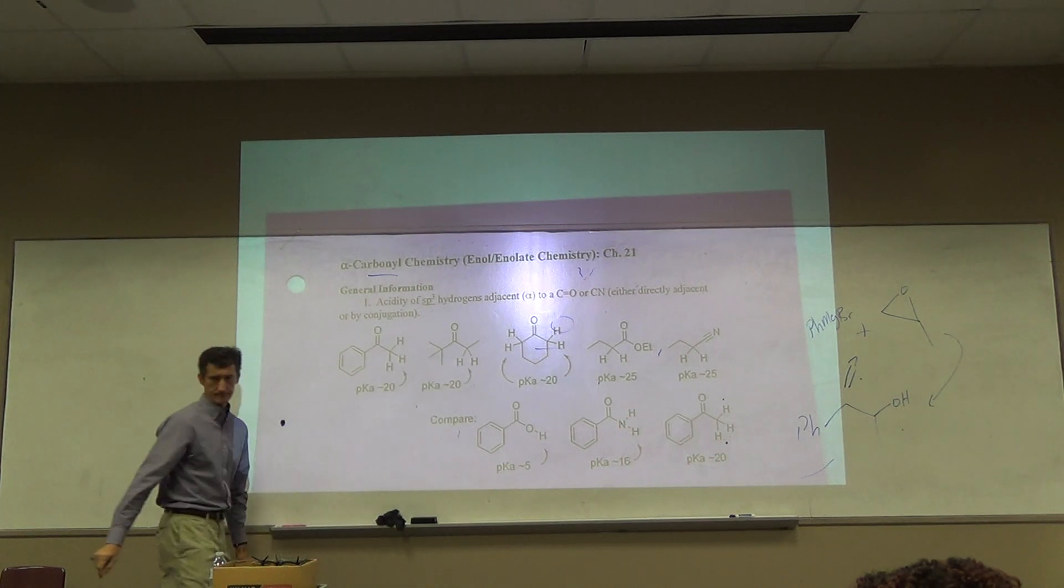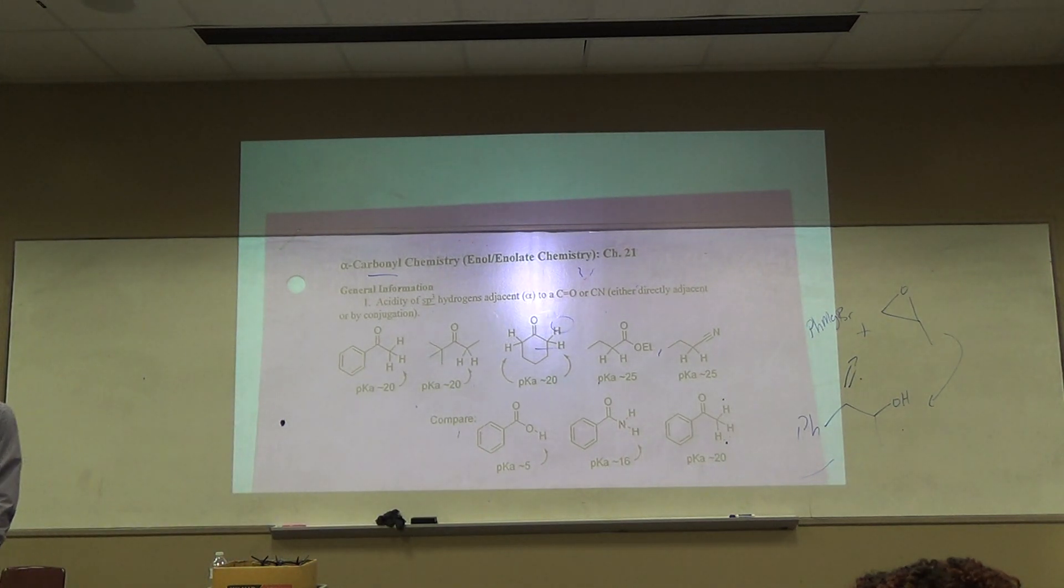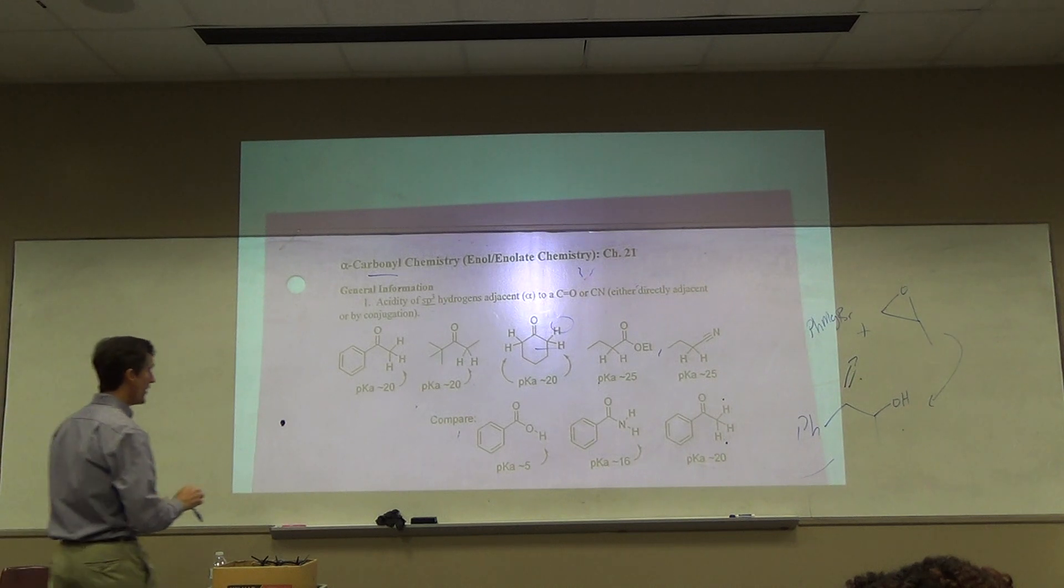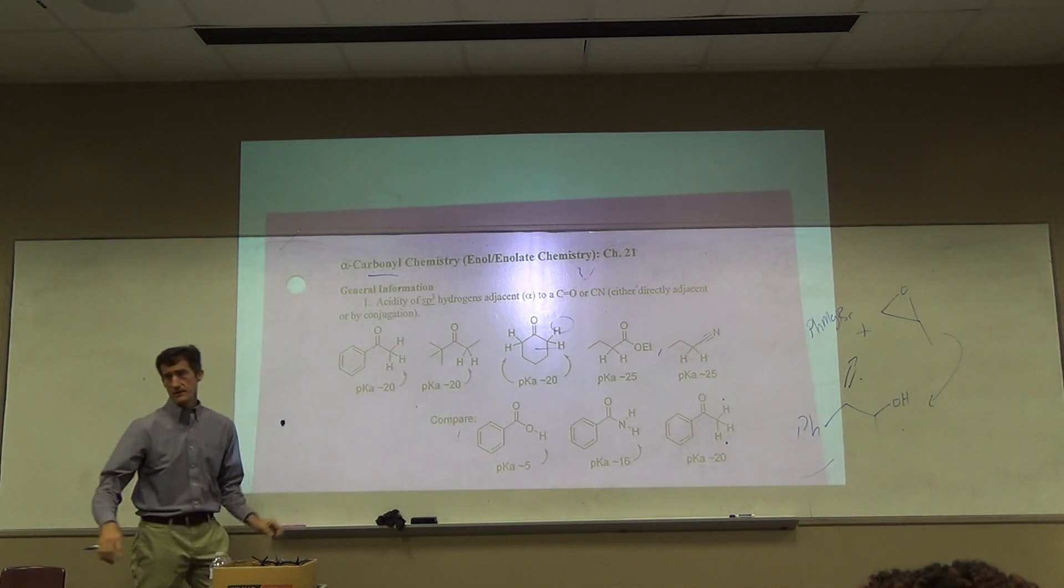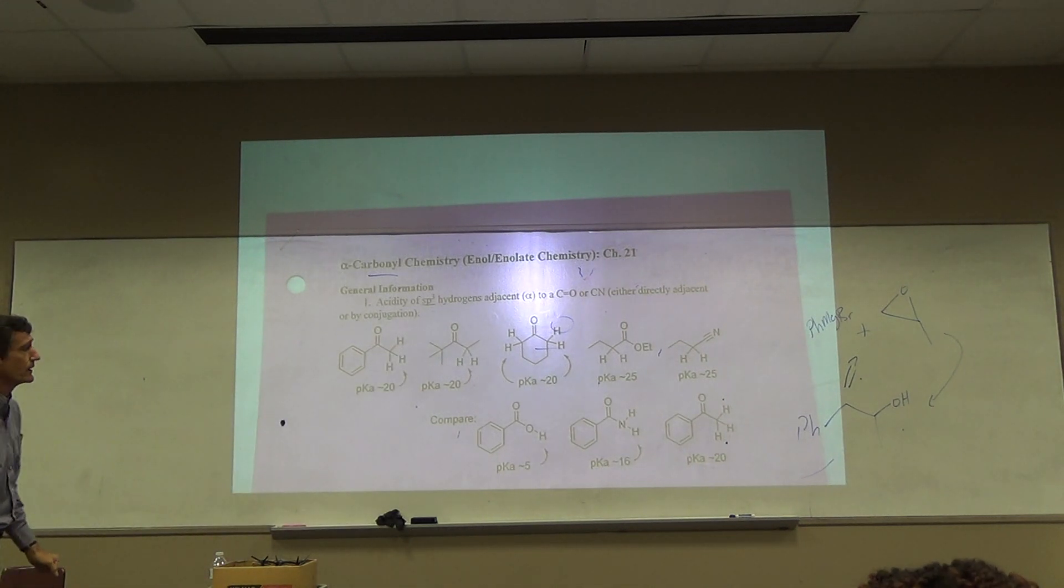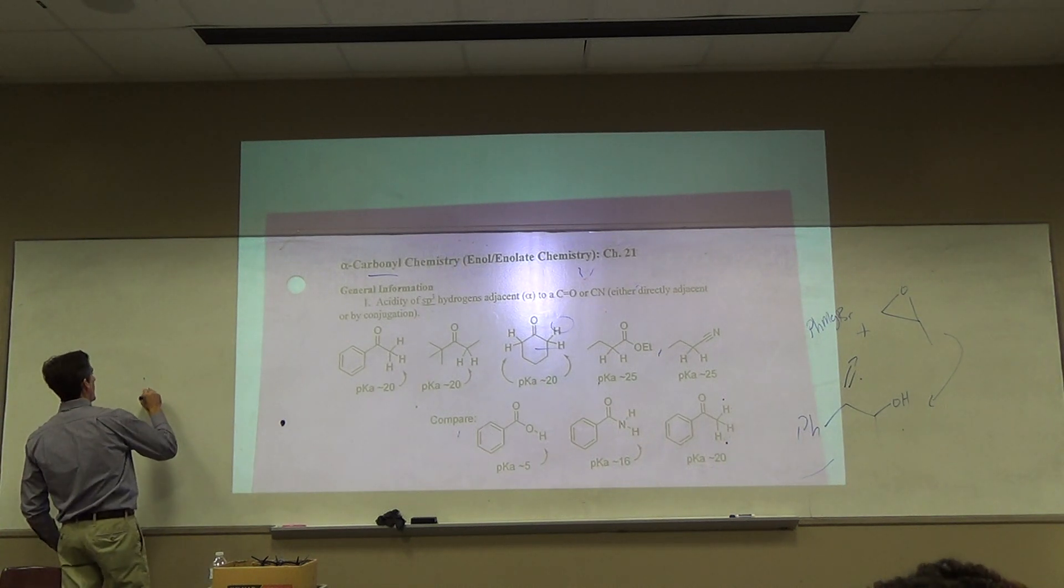H's alpha to a ketone or aldehyde. But aldehyde has a problem. These have a pKa of about 20. Aldehyde has a similar pKa. The problem is if you try to do this chemistry with aldehydes, aldehydes tend to be so electrophilic, so reactive at the carbonyl, it's hard to do chemistry next door.